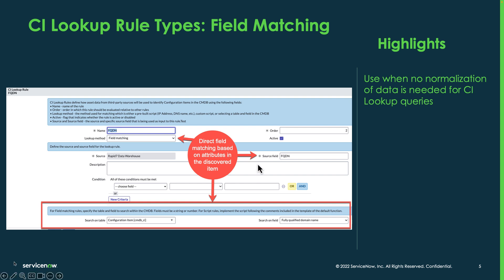For this example, you can see we're going to be using the FQDN from the payload, and we're going to look into the CMDB CI table. You can change this to other tables if you want specific queries done to specific classes. We're going to be using the fully qualified domain name field. You can create new rules with new tables and new fields as long as that field exists in the payload.